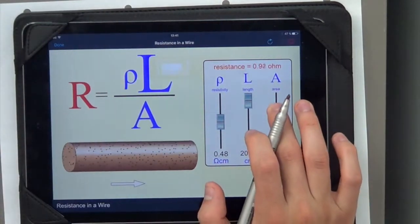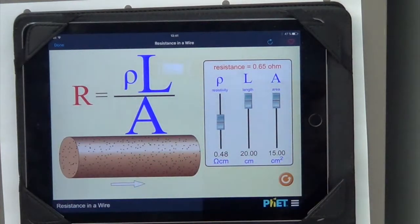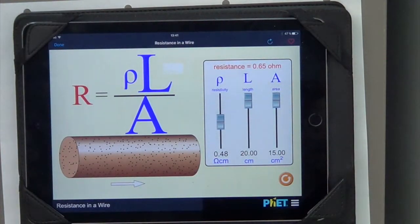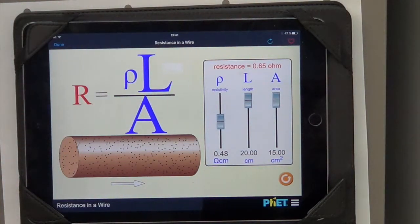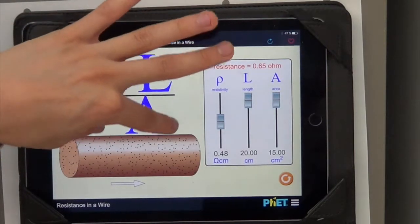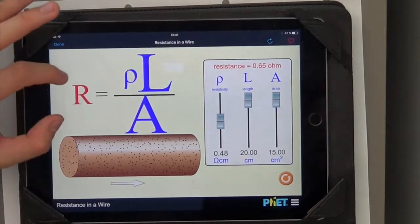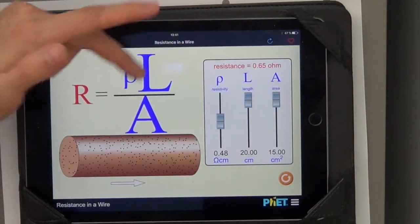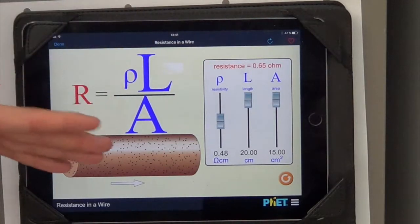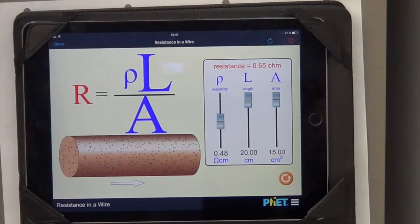If I increase its cross-sectional area, look what happens - the resistance decreases. From a mathematical point of view, if you're a mathematician, you can see why that is the case. Because the larger your denominator is, the smaller the overall value. So if you divide something by a million, it's going to be close to zero.